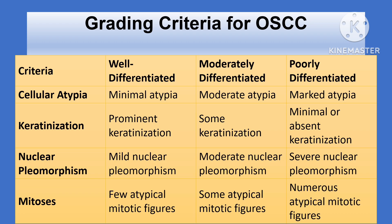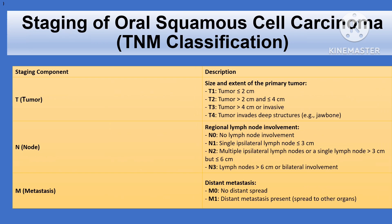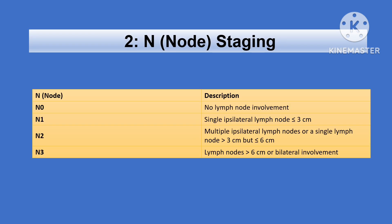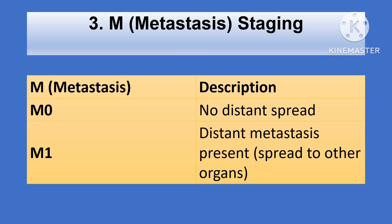For staging oral cancer, we commonly use the TNM system: T denotes the tumor size and extent of invasion into nearby tissues, N shows the involvement of regional lymph nodes, and M shows the presence of distant metastasis.